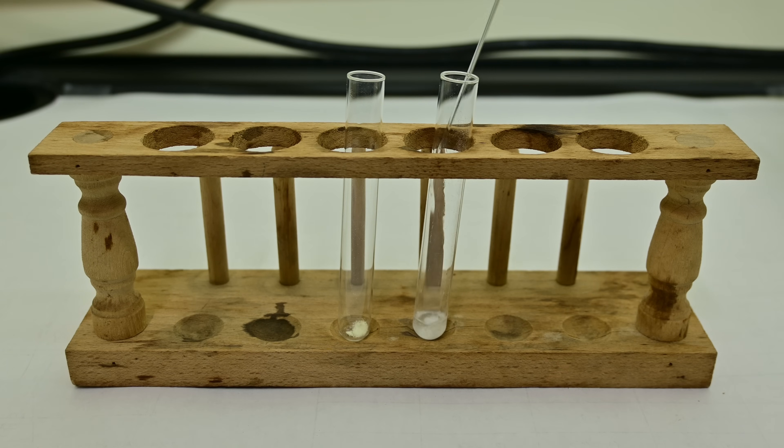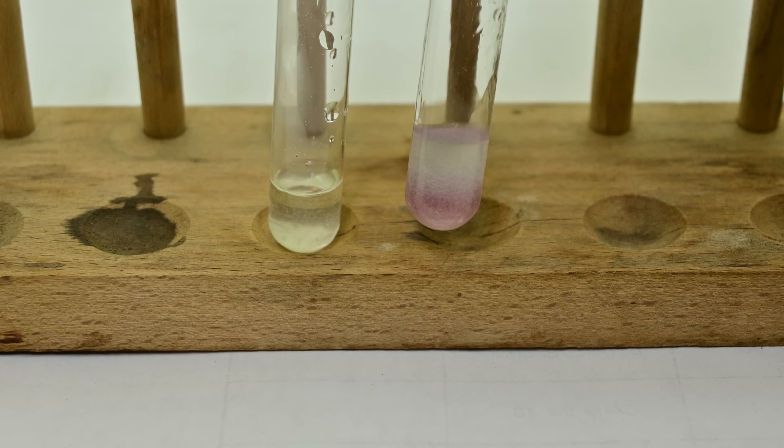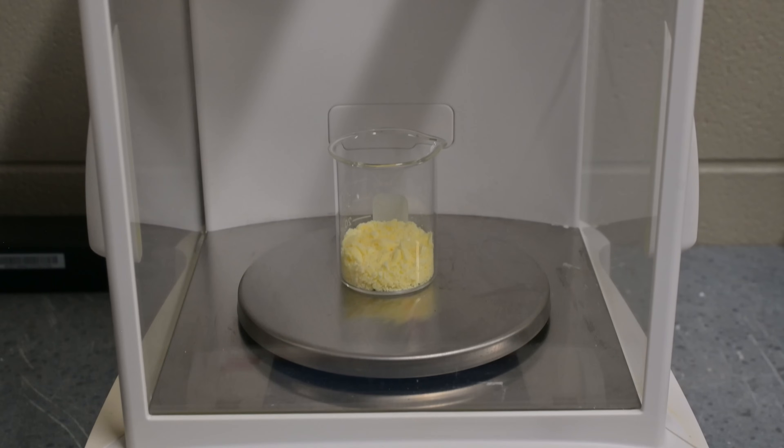To confirm our oxidation has fully went to completion, we can perform a simple test for residual benzoin. Take a few crystals of our benzil product and dissolve it into 1 milliliter of ethanol. We then add a single drop of sodium hydroxide solution. If any benzoin remains unoxidized, you'll see an immediate purple coloration. A clear solution, however, indicates that the oxidation was successful.